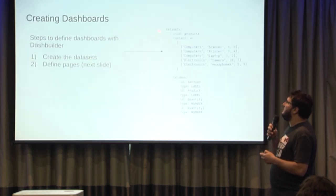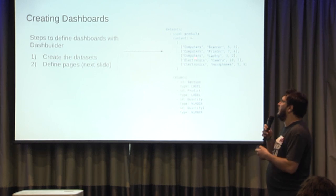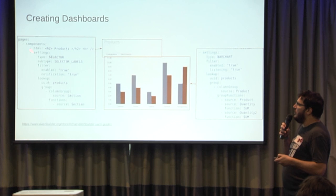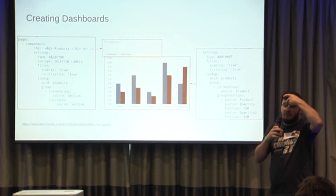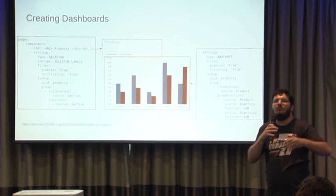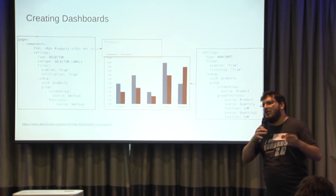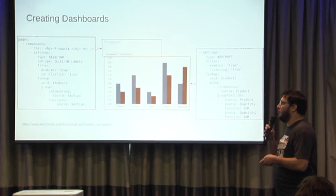You declare the dataset, you can declare the columns — if you don't, Dash Builder tries to guess what the columns of your dataset are. Then you create the visualization. Here I put a bar chart. But you can also put components that filter other components — for example, a selector. When you click on that selector, the chart is filtered. So it's all built in for free. We didn't want to go back to doing JavaScript and Java development to grab data, go row by row, filter, and update visualizations — we just want this to work. Dash Builder provides this.